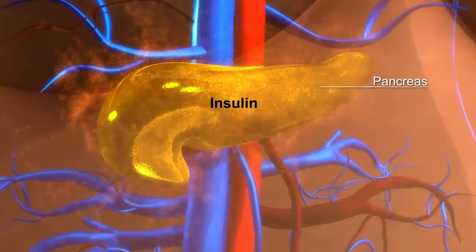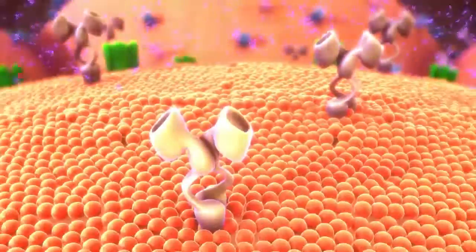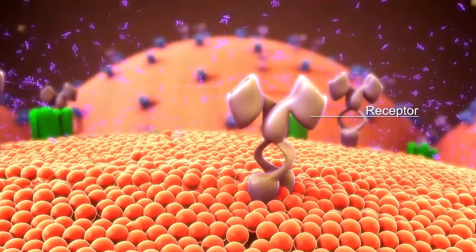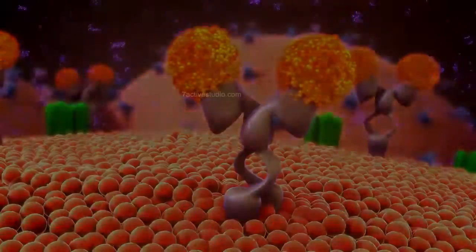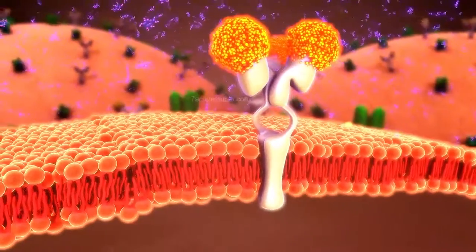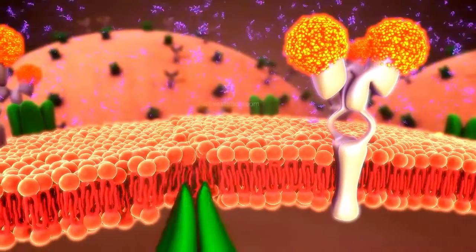Insulin, secreted by the pancreas, attaches to receptors in the cells, much like a key in a lock, thereby opening up the cell for the entry of glucose.